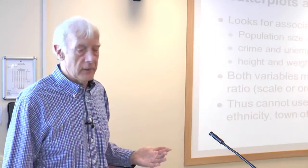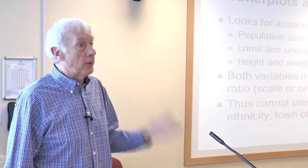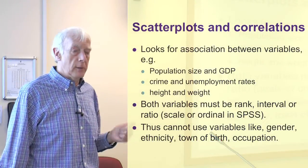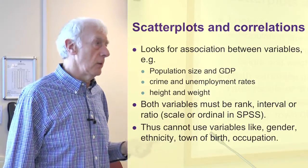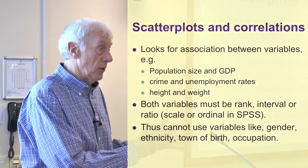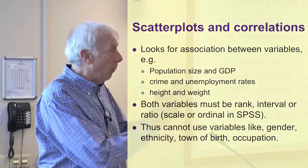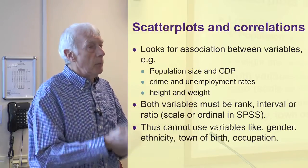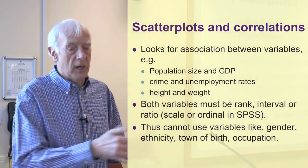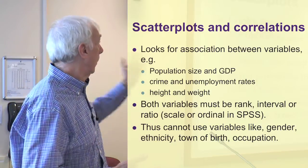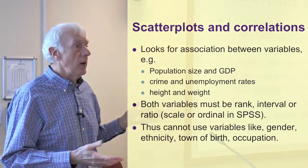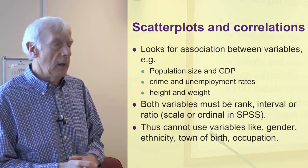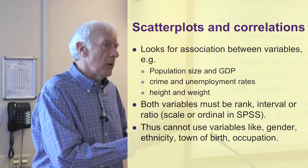What is the scatter plot showing? It's looking for an association between two variables — just like last week when we talked about how one variable changes with another. We're doing the same with a correlation: how does this variable change with another variable? For example, how does population size relate to GDP — gross domestic product? Do countries with bigger populations have higher GDPs?